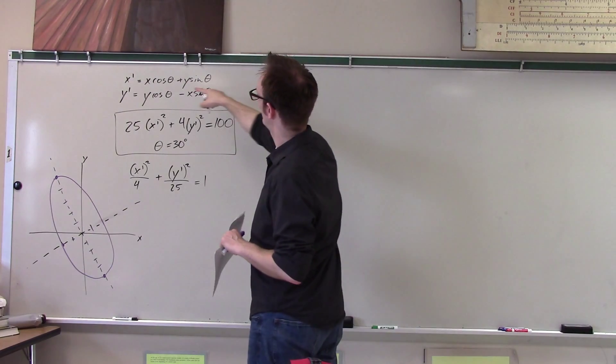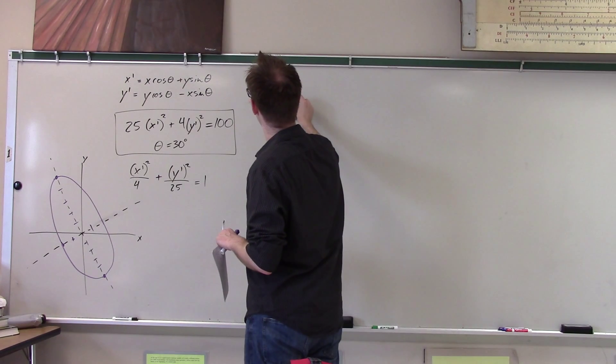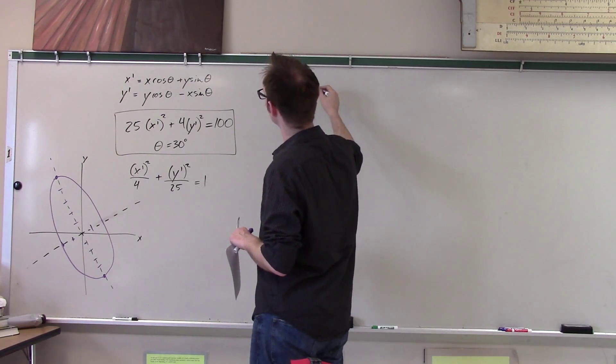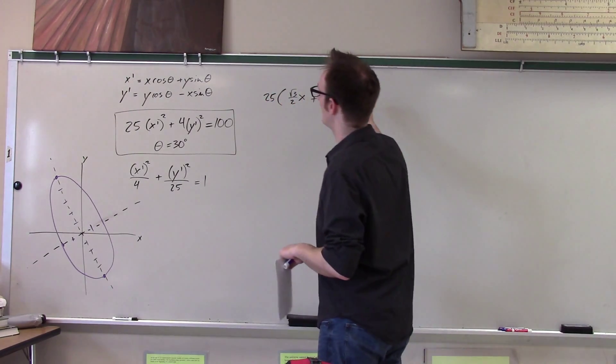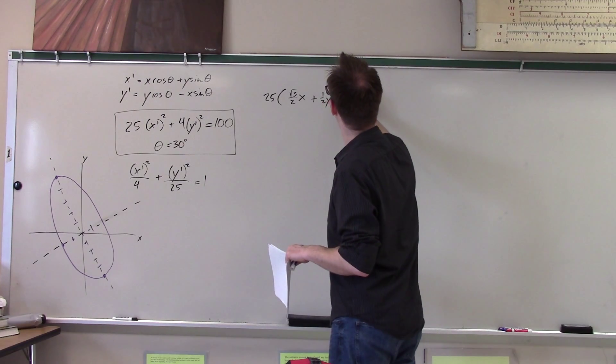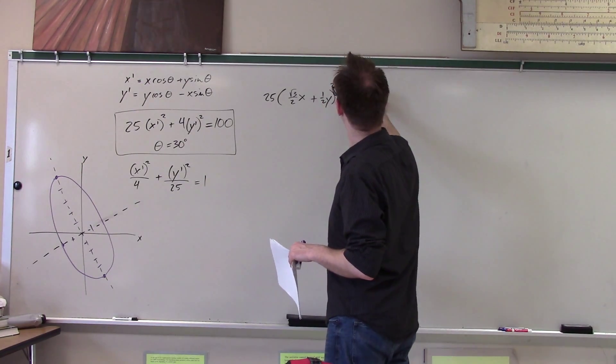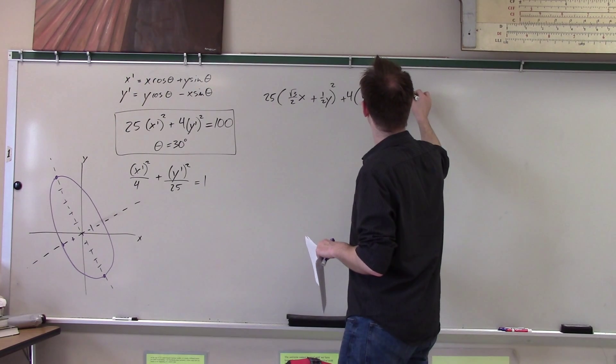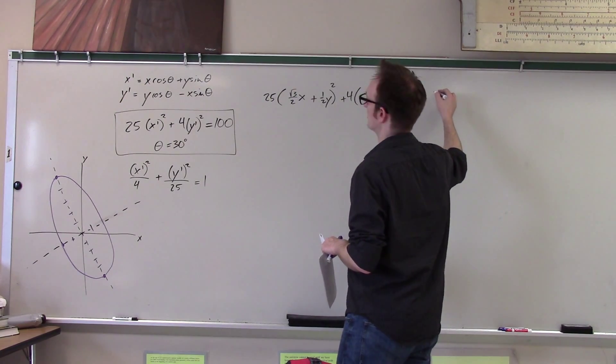So it's cosine theta, and cosine 30 is root 3 over 2. So it's root 3 over 2 x plus 1 half y squared plus 4 times root 3 over 2 y minus 1 half x squared equals 100.